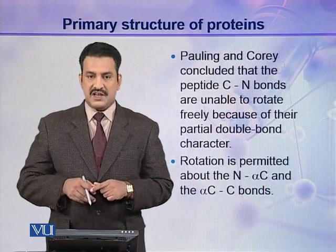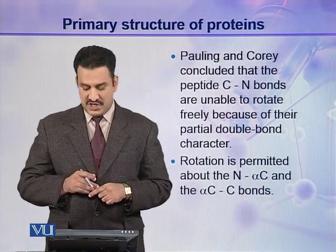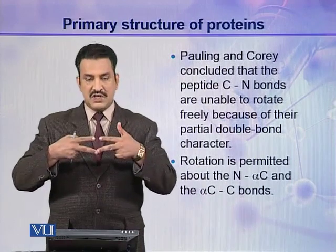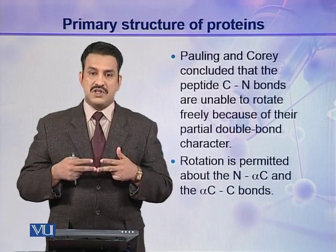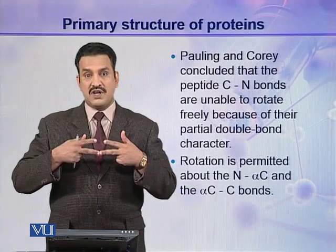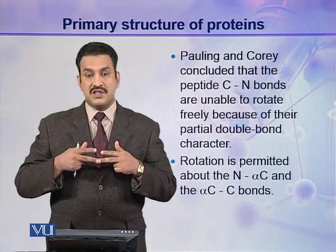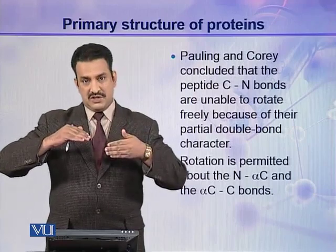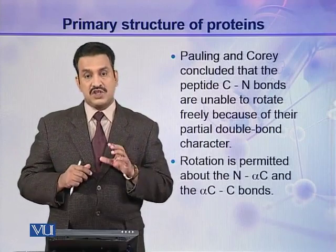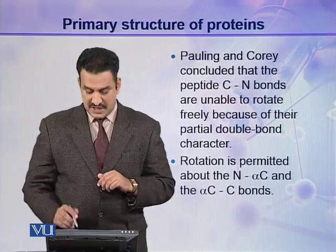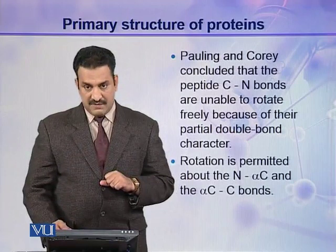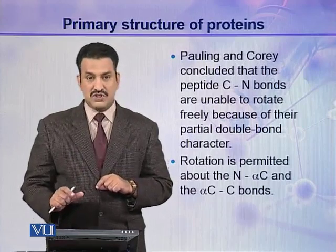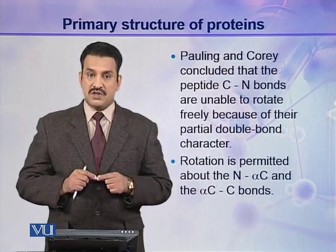Pauling and Corey concluded that the peptide C-N bonds are unable to rotate freely because of their partial double bond character. Single bonds can rotate, but double bonds cannot, and since the peptide bond is a partial double bond, it is rigid and cannot rotate. If it cannot rotate, how do different peptide groups become angular to each other? Rotation is instead permitted about the N–alpha carbon bond and the alpha carbon–C bond, while the peptide bond between C and N remains rigid.